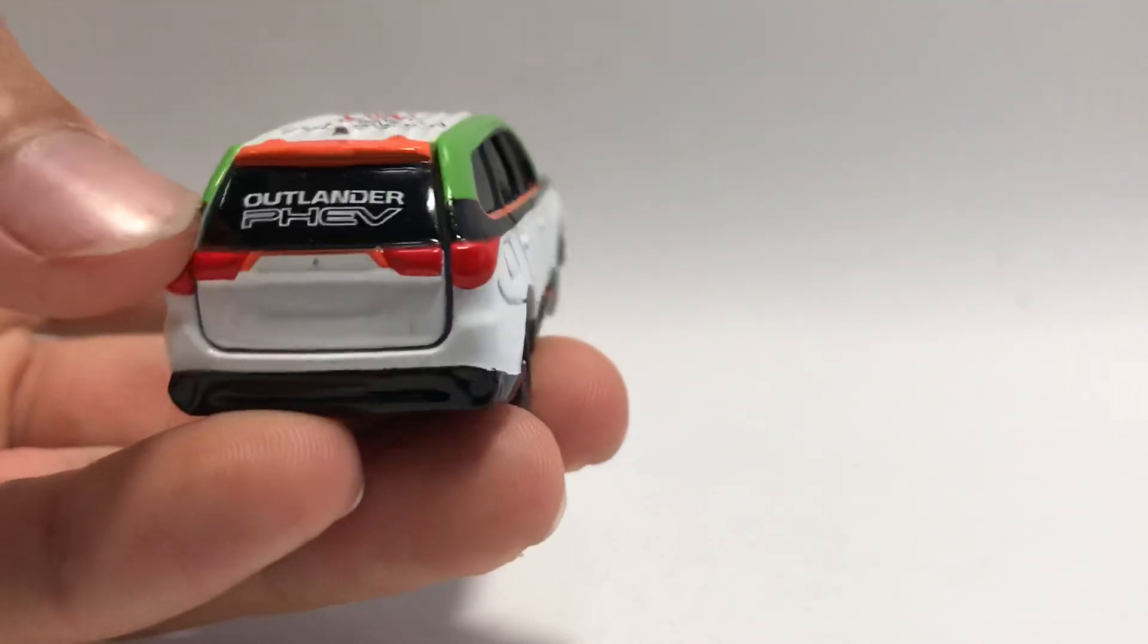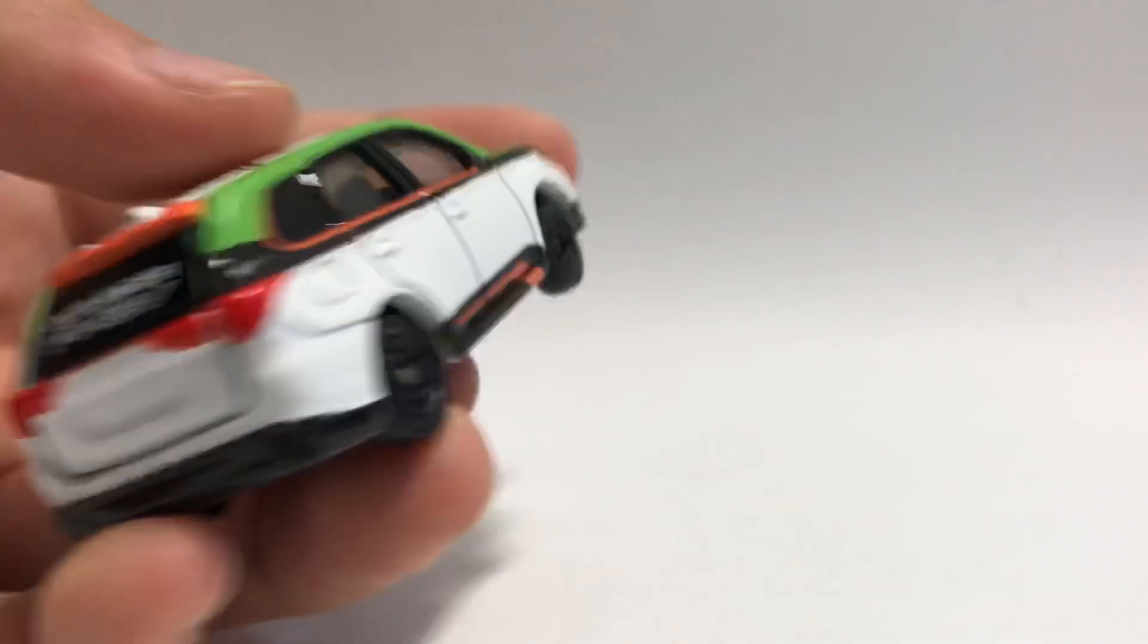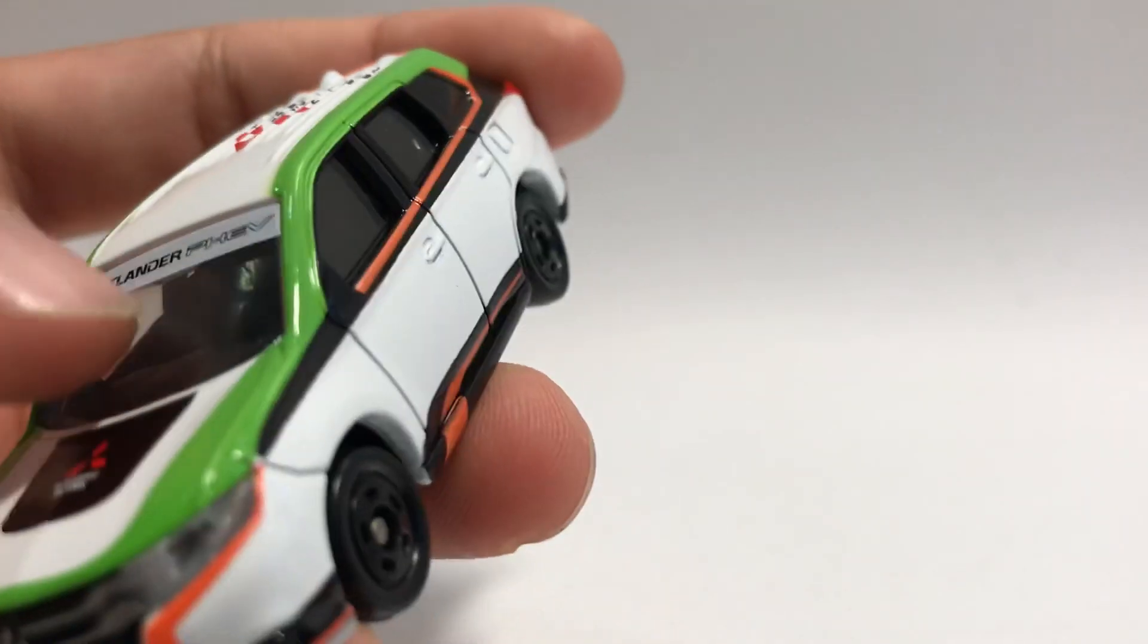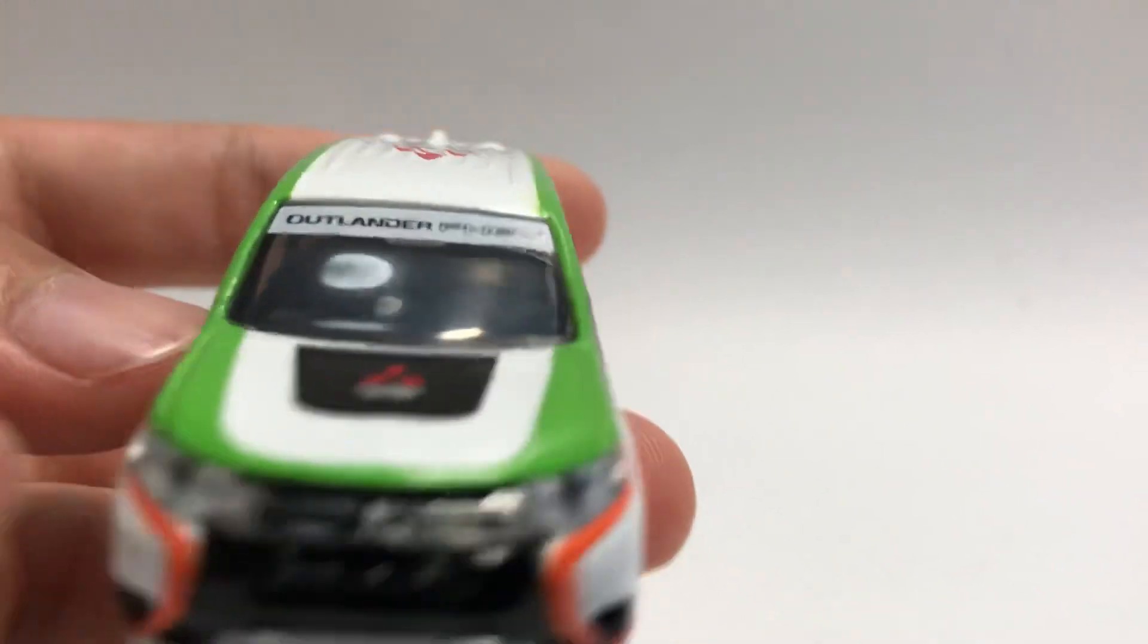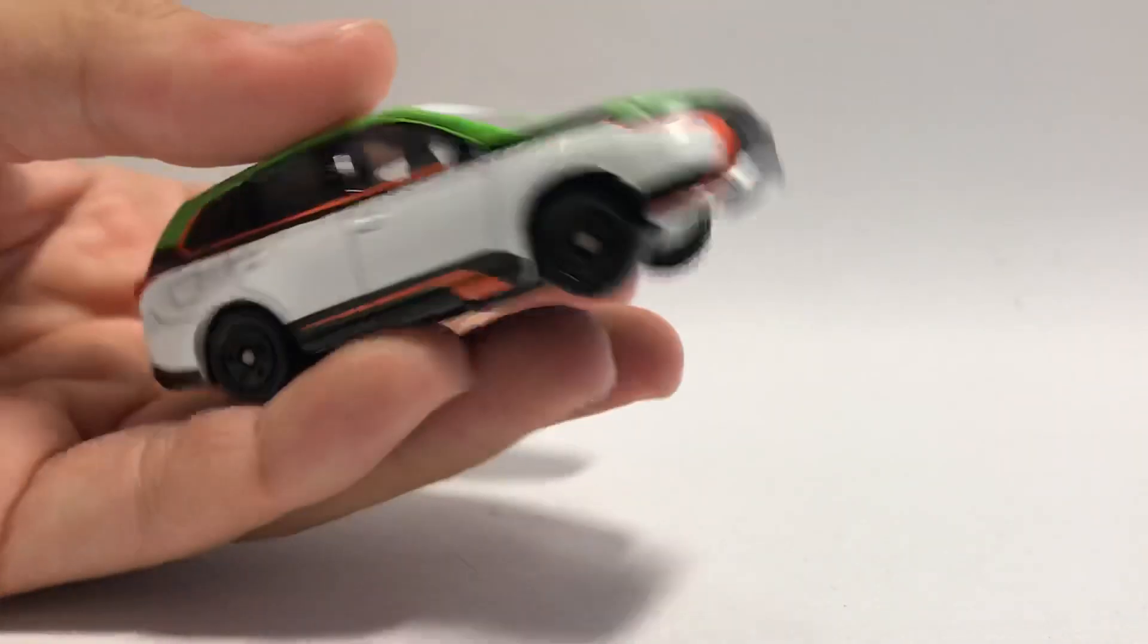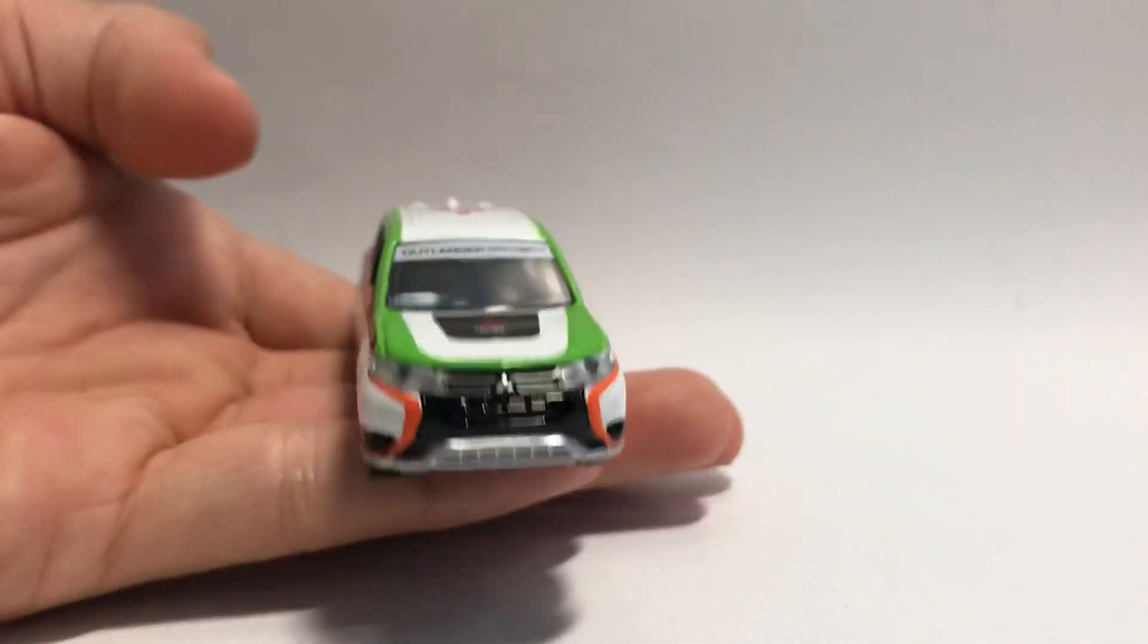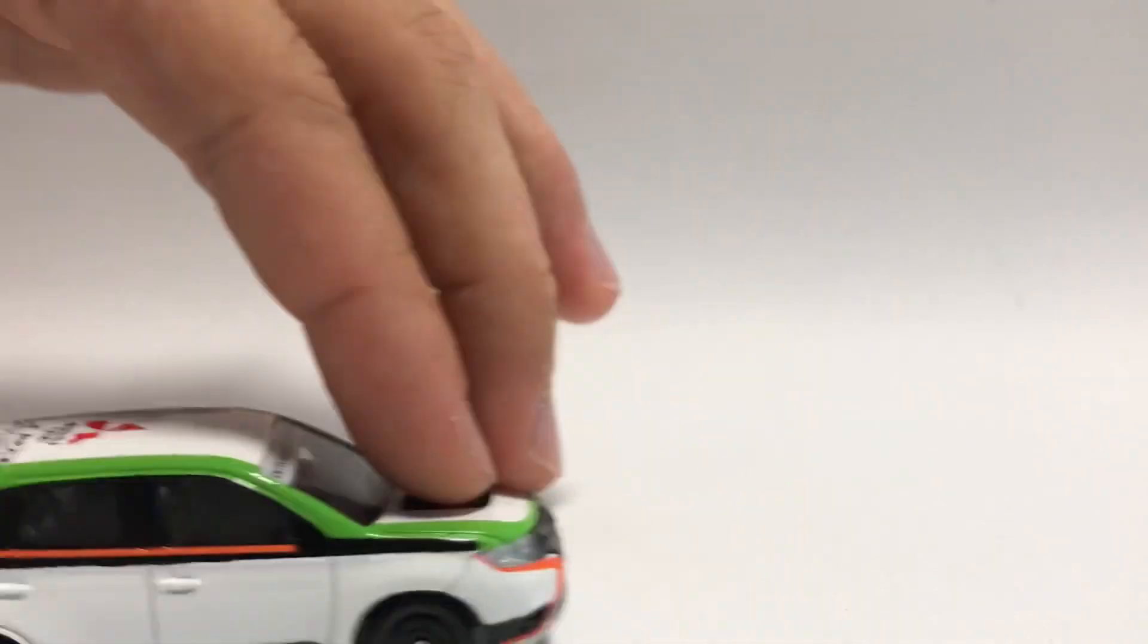With an Outlander PHEV. And again, on the back of the boot. As well, we have a little sticker or decal right here on the windscreen. Outlander PHEV. Again, another 2016 car. And really, really nice in this beautiful four-colored color scheme. So yes, that's pretty much it for today's video.